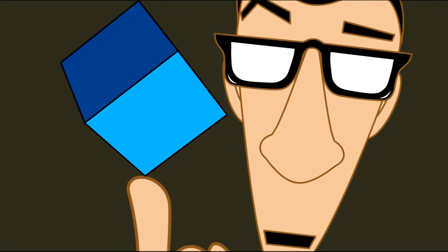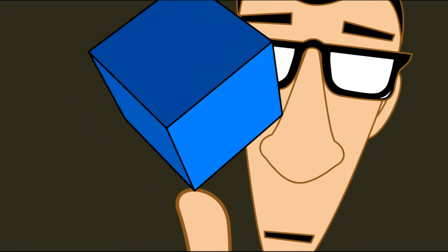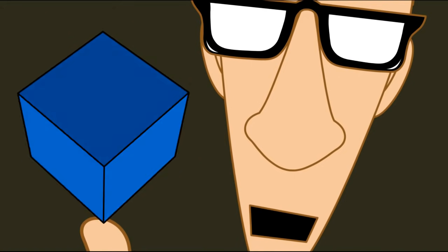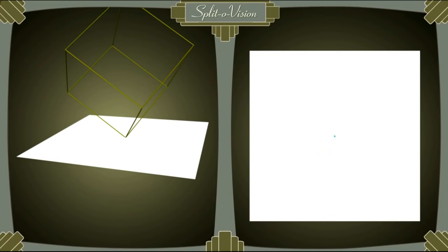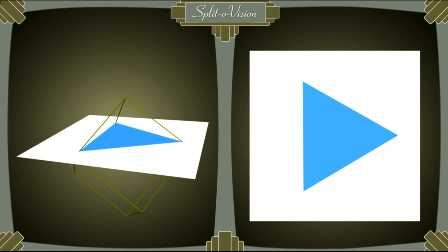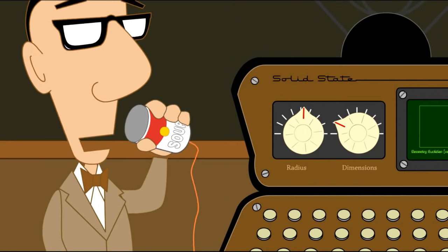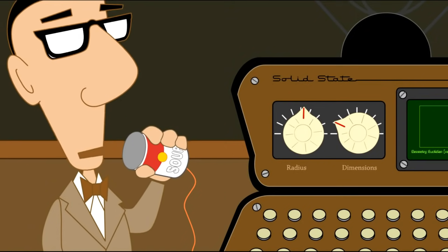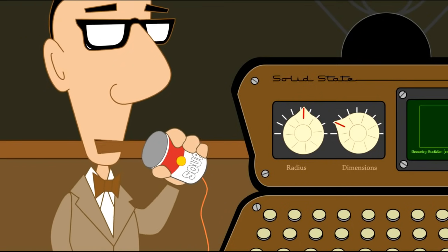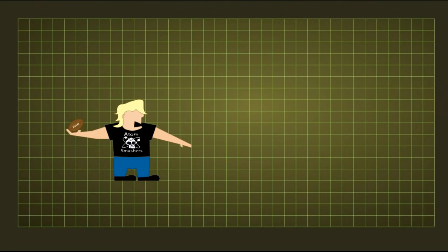An even more interesting way that the cube could pass through the two-dimensional space would be if one of the corners of the cube intersected the plane first. In this case, Mr. Moosemasher would see a point appear, then grow into a triangle, then a hexagon, then a different triangle, and finally shrink back to a point and disappear. Now, Mr. Moosemasher, will you please demonstrate what happens when you throw your football test object? Sure thing, Professor.